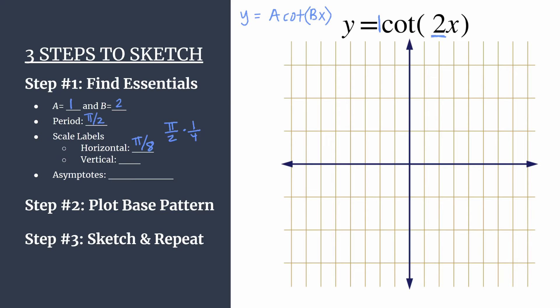We see our tick marks on our horizontal axis should be counting by pi over eight. Now you don't have to be as intentional with the vertical axis. In most cases, one will work really well. So let's go ahead and take a minute to get our axes labeled.